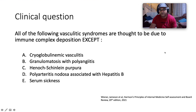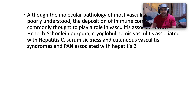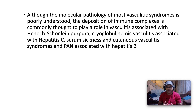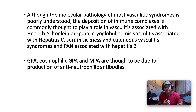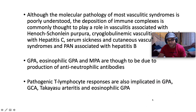Coming back to our clinical question — all of the following vasculitic syndromes are thought to be due to immune complex deposition with one exception. The answer is GPA, granulomatosis with polyangiitis. Although the molecular pathology of most vasculitic syndromes is poorly understood, immune complex deposition is thought to play a role in Henoch-Schönlein purpura, cryoglobulinemic vasculitis associated with hepatitis C, serum sickness, cutaneous vasculitis, and polyarteritis nodosa associated with hepatitis B. Granulomatosis with polyangiitis, eosinophilic GPA, and microscopic polyangiitis are thought to be due to production of anti-neutrophil cytoplasmic antibodies — ANCA. Pathogenic T lymphocyte responses have also been implicated in GPA, giant cell arthritis, Takayasu, and eosinophilic GPA.